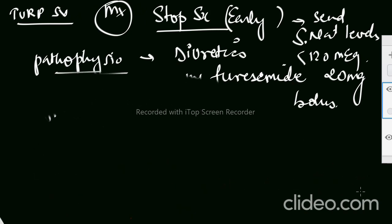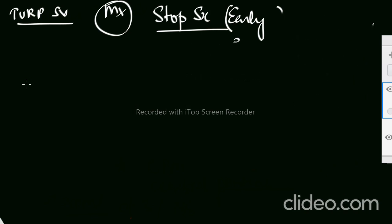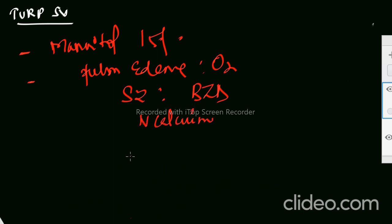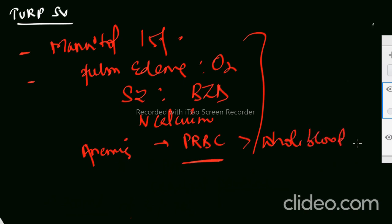And then you have to give some symptomatic treatment. We can also give mannitol. And if the patient is having symptoms of pulmonary edema, you have to give oxygen to the patient. If the patient is throwing seizures, we can give benzodiazepine to the patient. And if the patient is having some acute cardiac disturbances, you can give IV calcium. That's a symptomatic treatment. Whatever the patient is showing symptoms you can give that. If there is blood loss, if there is anemia, we already read that you should prefer giving PRBCs rather than whole blood to the patient.